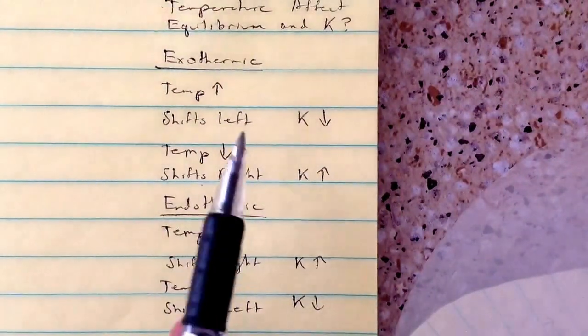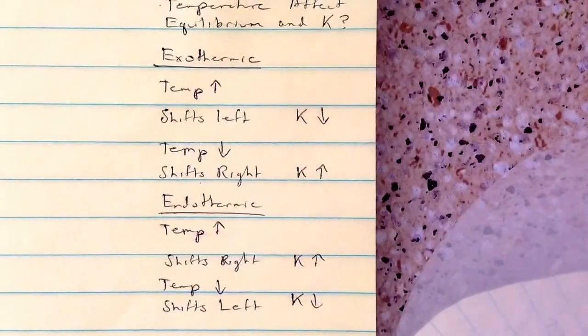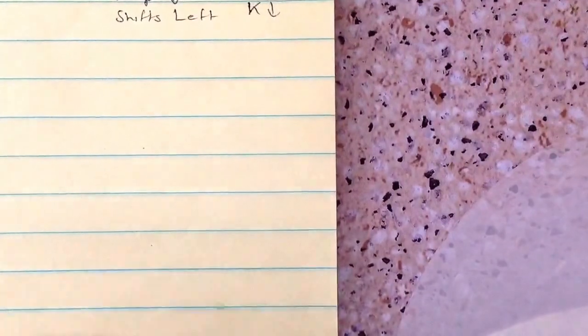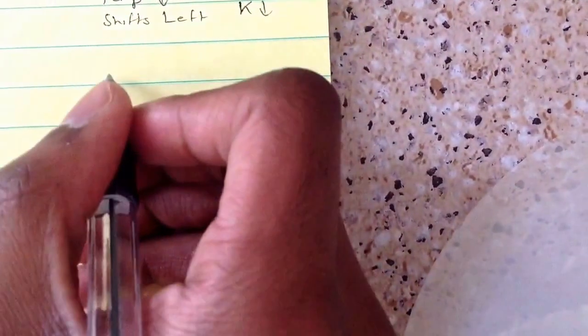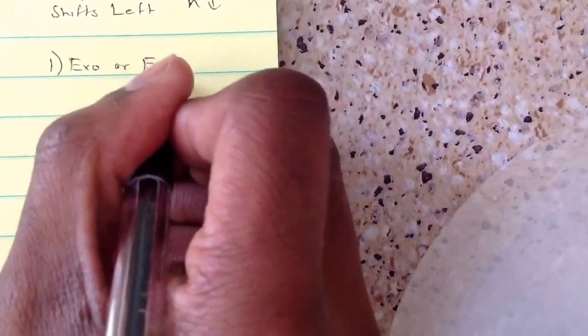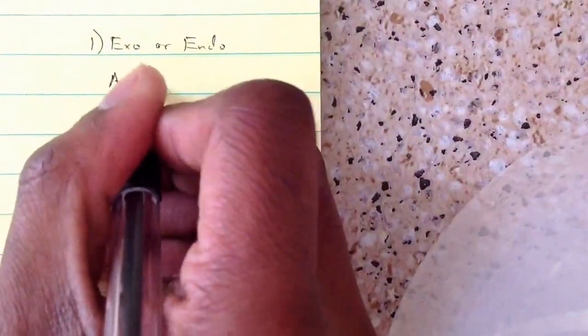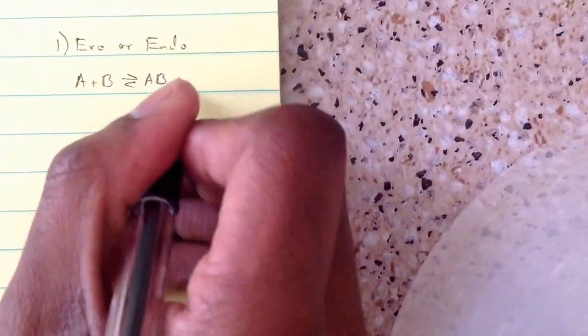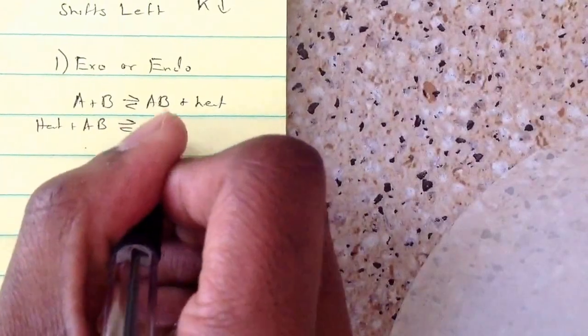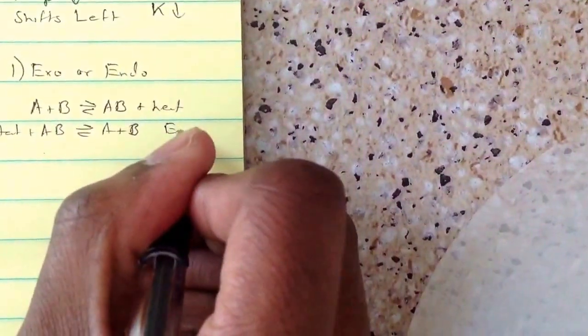Now I'll explain how this all works. The first step is to determine whether the reaction is exothermic or endothermic. Usually the equation will tell you. For example, if they give you A plus B → AB plus heat, since heat is being released, you know it's exothermic. If it's AB plus heat → A plus B, then you know it's endothermic.